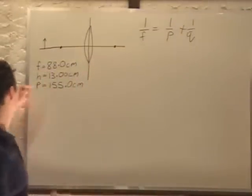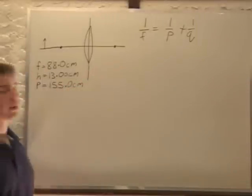So in this case we know P, we know F, and we're trying to find out Q, our image distance.